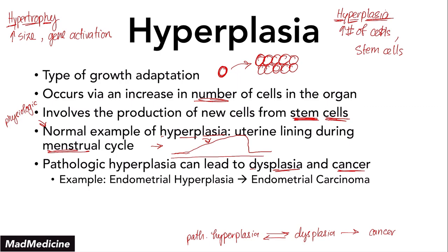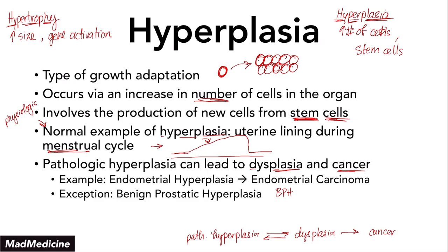An exception to this rule in males is benign prostatic hyperplasia, also known as BPH. BPH is very important because you're going to hear a lot about it in medical school, board preparation, and in real life. It's a very common, prevalent condition in which the prostate goes through hyperplasia, grows in size, and leads to a plethora of symptoms. However, the key thing to remember about BPH is that there is no association with BPH progressing to prostate cancer. BPH is a very benign condition — hence why it is called benign prostatic hyperplasia.